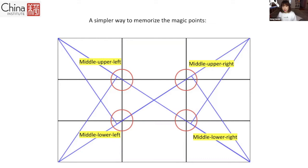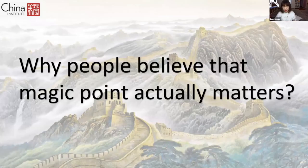If I ask you where the magic points are, you can remember: middle upper-left, middle lower-left, or middle lower-right. So usually we draw our main object over there if you really want your audience to see it, because this point really draws people's eyes in. That's why people believe that magic points actually matter — we're going to check it out together.